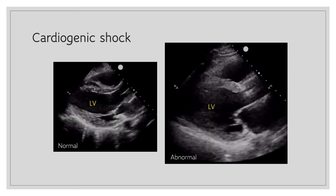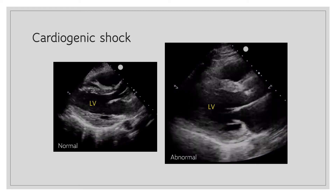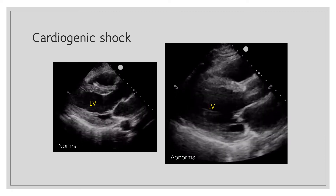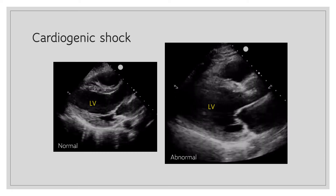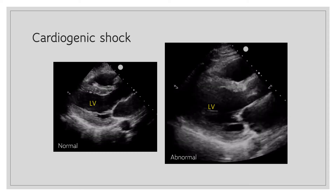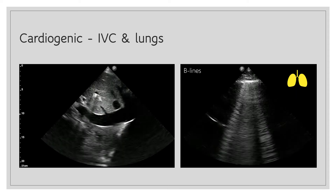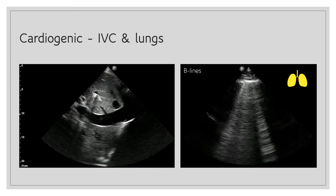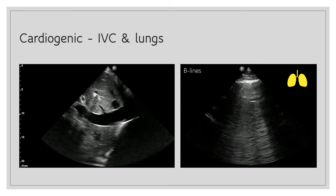This right image of the parasternal long axis view was obtained from a patient with cardiogenic shock. Note that the LV walls are not thickening or moving as much and the mitral valve leaflets are barely opening — that's suggestive of severely reduced LV systolic function. The inferior vena cava is full or plethoric and not significantly collapsing with respiration, suggestive of high right atrial pressure. Lung ultrasound shows a B-line pattern — three or more B-lines per rib interspace — and when diffuse, this is suggestive of cardiogenic pulmonary edema.